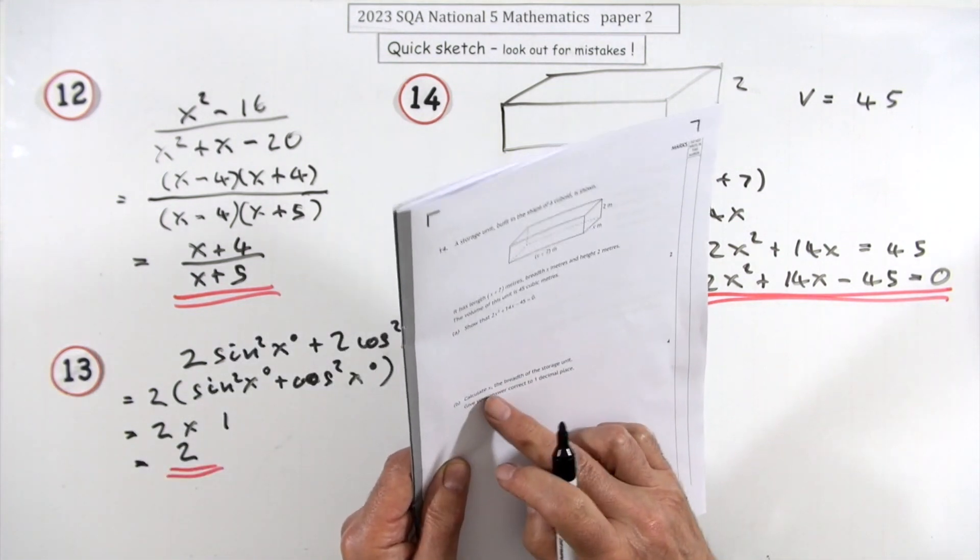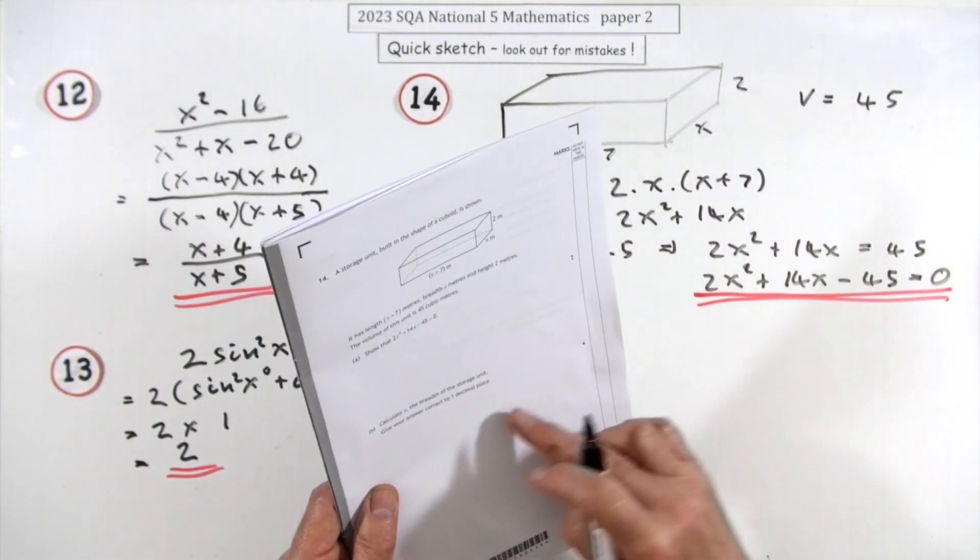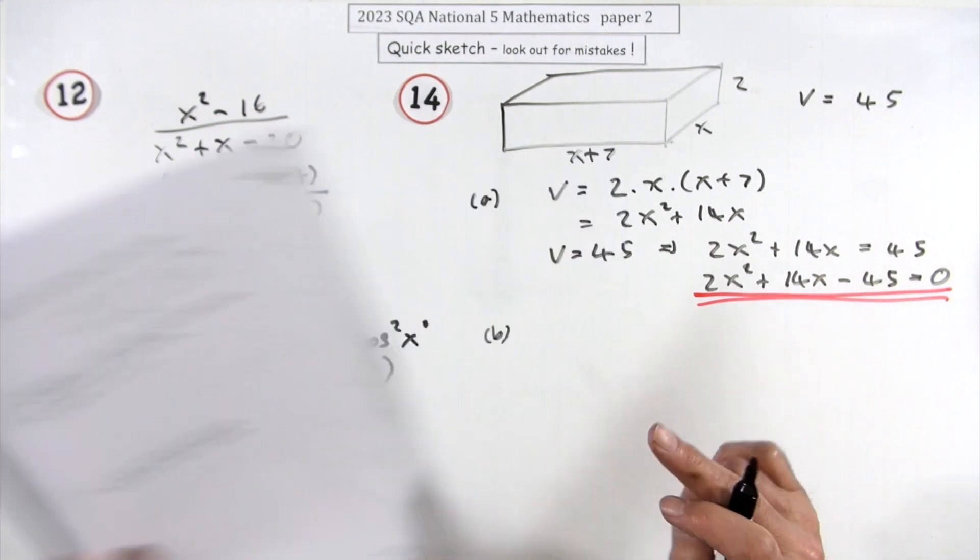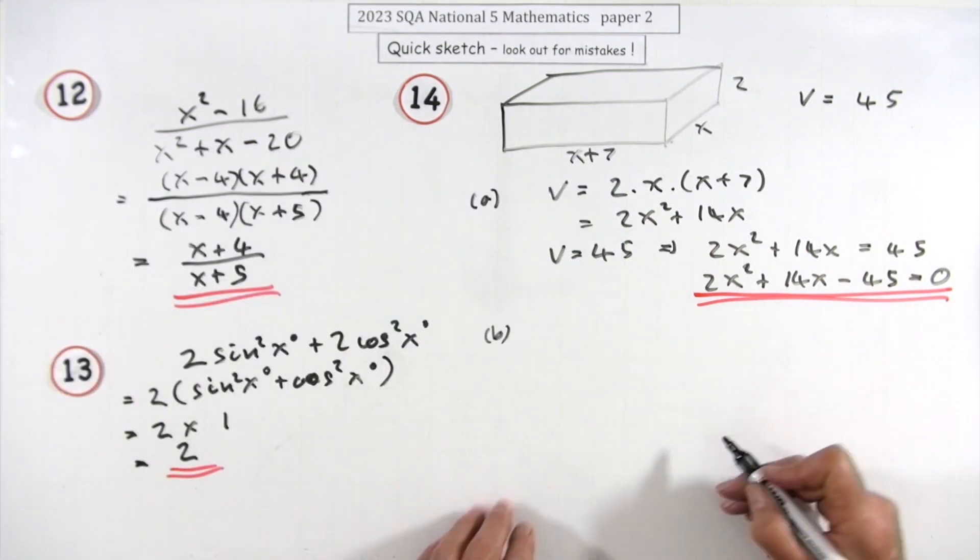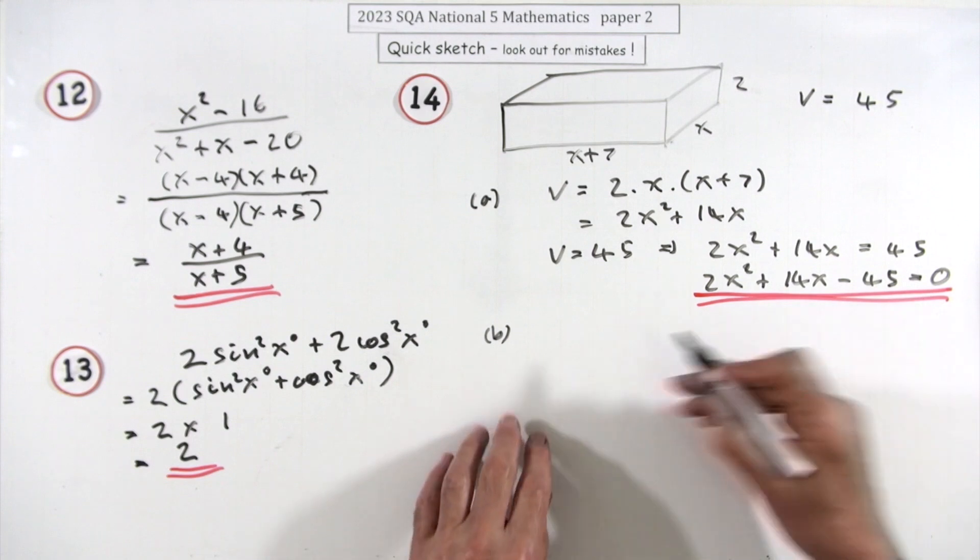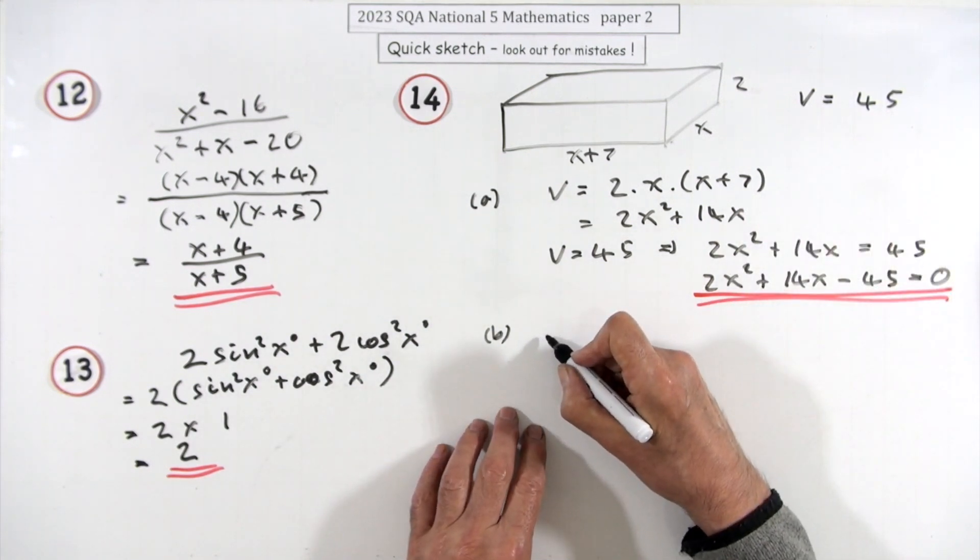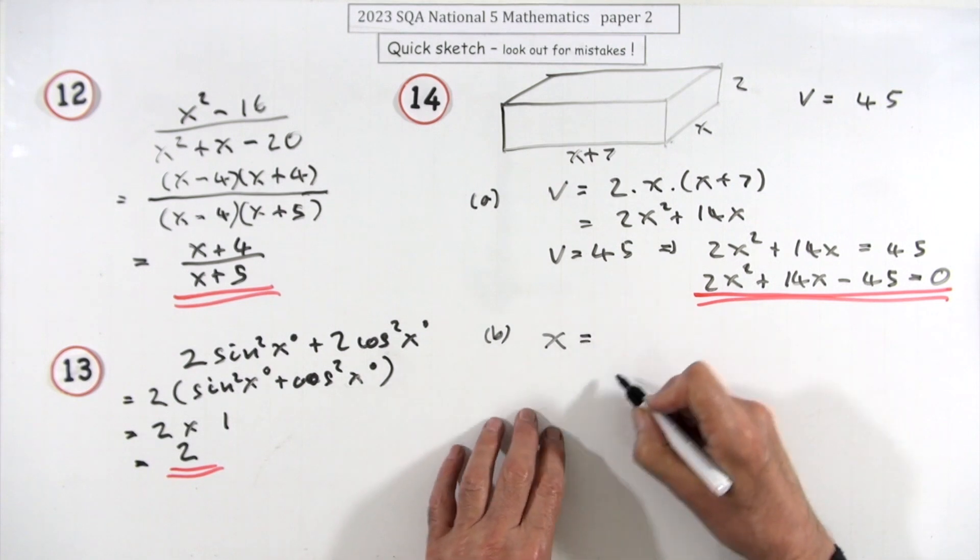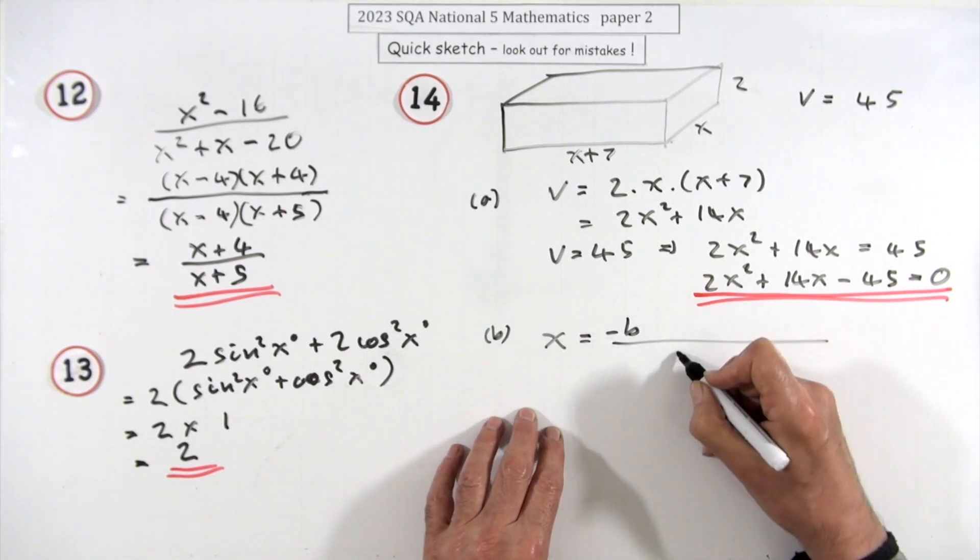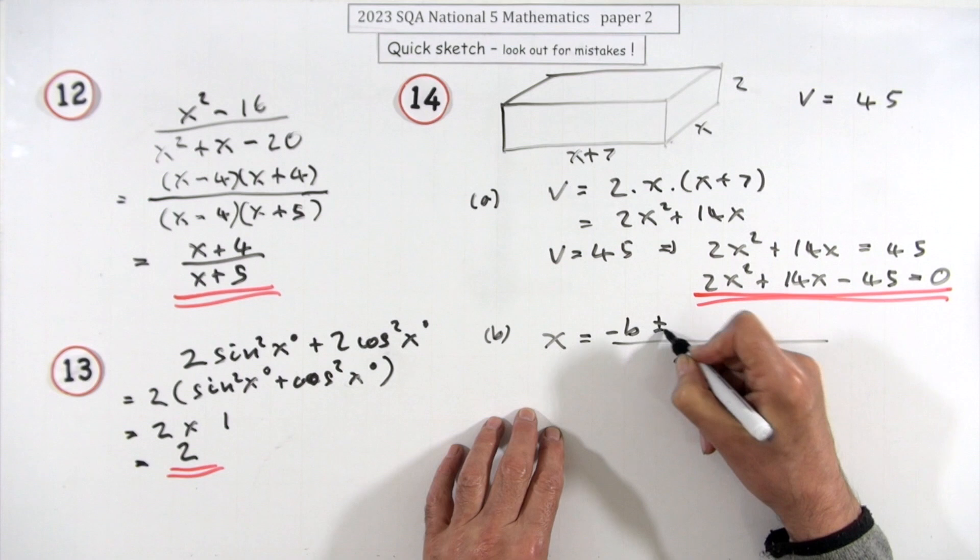Now part B: calculate x, luckily just the breadth there, correct to one decimal place. I just mean solve that equation. There should be two answers, so one will probably end up negative.